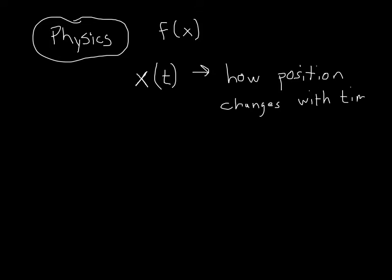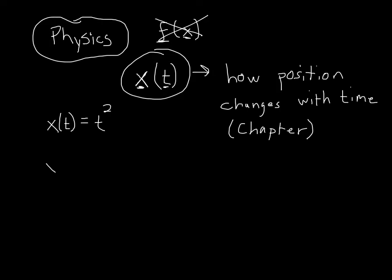So this function really tells us how position, in this case an x position, but it could be any other kind of position that you want, how position changes with time. If you remember, this was one of the big things that we needed to know about to describe a particle all the way back from chapter 1. So in physics, we need to get used to not thinking about f of x and start thinking about x of t.